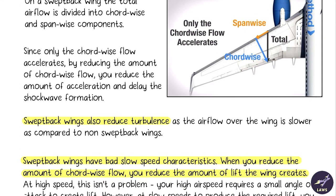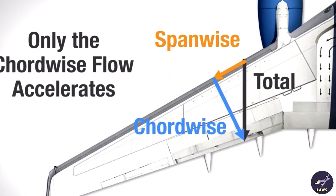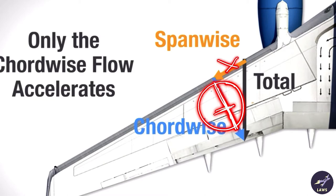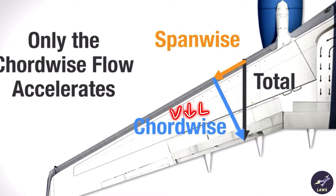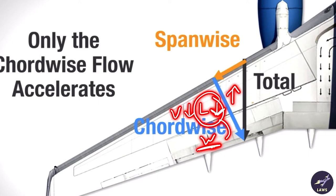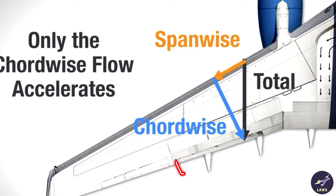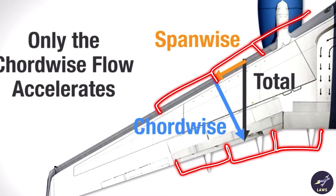The main disadvantage of swept-back wings is bad low-speed characteristics. At slower speeds, total flow is less and chordwise flow is even lesser. Since lift mainly depends on chordwise flow, lift is insufficient to balance weight at low speeds. To increase lift, high-lift devices are used — trailing-edge flaps extended during takeoff and leading-edge slats — which increase lift temporarily while extended.